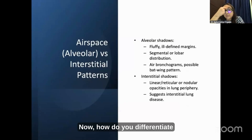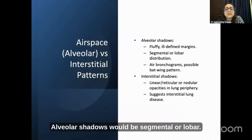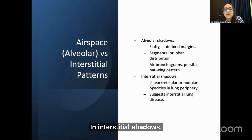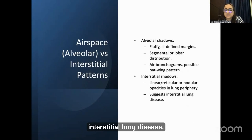How do you differentiate between alveolar shadows and interstitial shadows? Alveolar shadows would be segmental or lobar, fluffy with ill-defined margins. You could see air bronchograms and possibly a batwing appearance. In interstitial shadows, there would be linear, reticular, nodular opacities concentrated in the lung periphery, suggestive of interstitial lung disease.